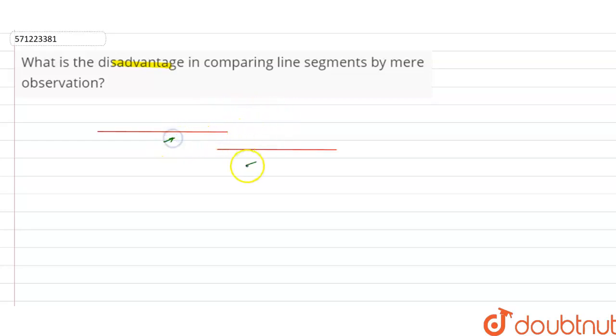For example, these two are the line segments. There is a slight difference between these two line segments. So by mere observation, we cannot compare these two line segments - which line segment is greater in length or not.